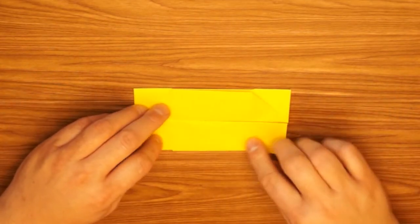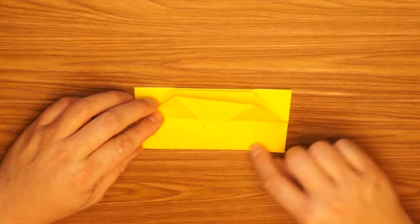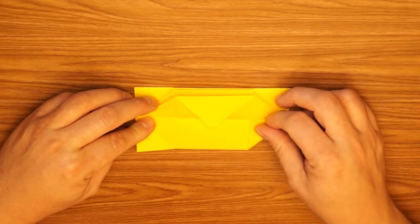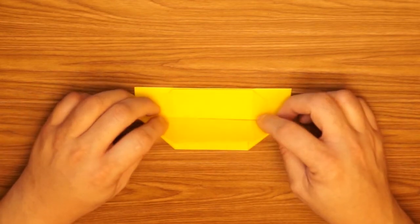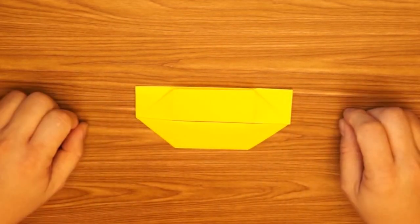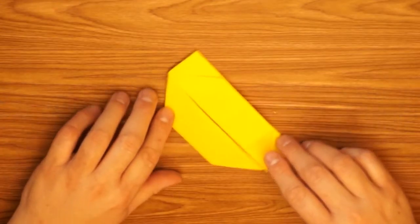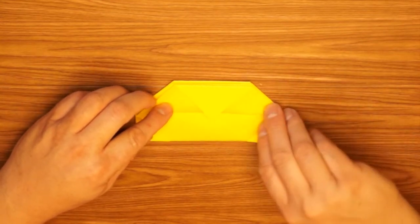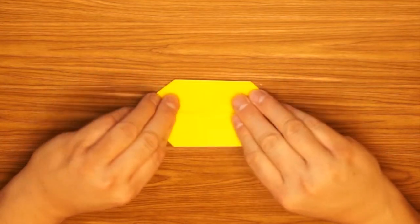We're going to take the flap on the bottom here, lift it up, and you can see a slanted edge of the paper on each side. We're going to fold the corners in on that edge and then fold that flap back down. Spin it around and repeat the process. Lift up the flap, fold the corners in, and fold the flap back down.